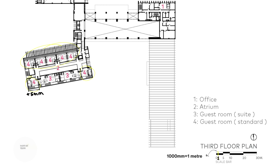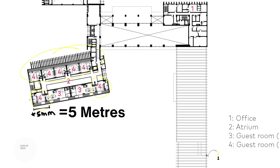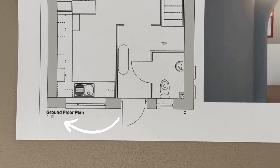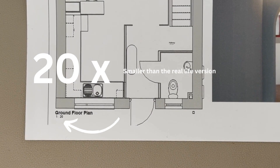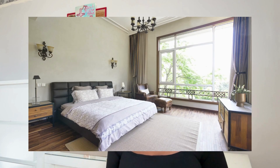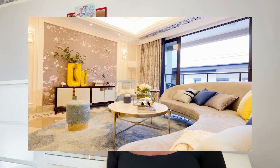It looks like the guest room spaces on this floor plan are equivalent to about five millimeters on paper, so in real life you can imagine that the length of these rooms is about five meters. One to twenty scale just means that the drawing is 20 times smaller than the real life version. By returning to the scale bar we can determine the size and proportions of different rooms, spaces and furniture.